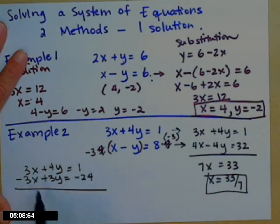Add these guys together. X's go away. 7y equals 1 minus 24 is negative 23. Finish by dividing by 7.